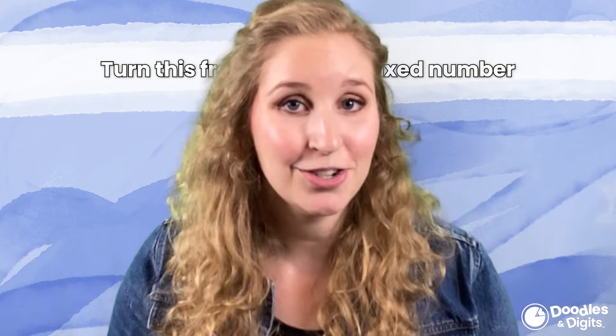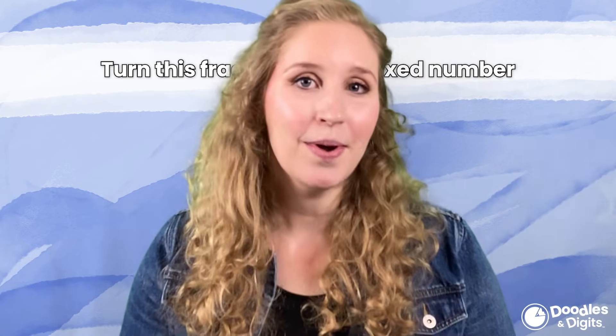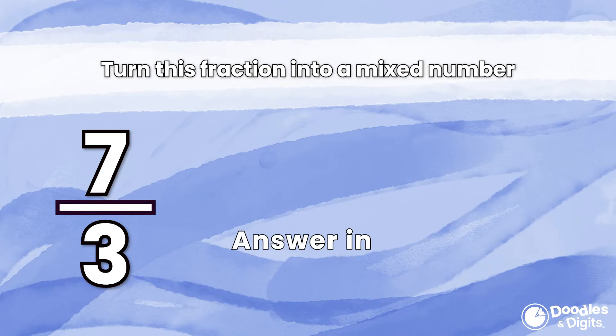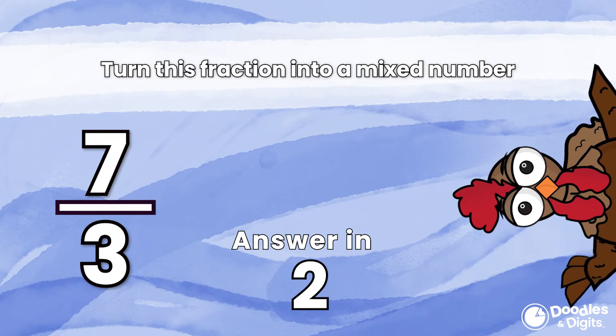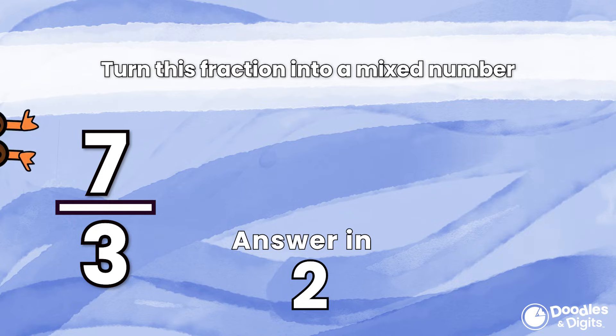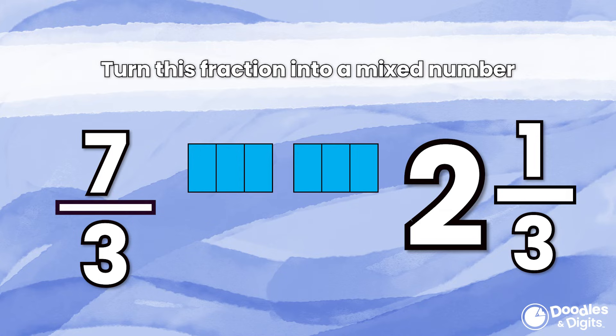Now that we've tried a few together, and I've shown you a few different strategies, I want to see if you can solve a few on your own. Remember, you can use any of the strategies that we learned, just find the one that works best for you. Seven thirds. Two and one third.